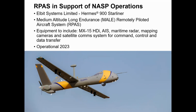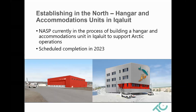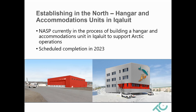Another area of development is establishing supporting infrastructure in the Arctic. NASP aircraft supports Canadian efforts in safety, security, environmental, and economic interests in the Arctic, and the Dash-7 deploys to Iqaluit, Nunavut. To date, crews have been working with no hangar and staying in rented rooms and hotels, which offers challenges to the operation. Transport Canada is investing in Arctic infrastructure: there will be a hangar for the Dash-7 with capacity to support the RPAS and Coast Guard helicopters, plus an accommodation unit for the crew. There have been some delays due to COVID, but we're hoping the hangar will be operational by summer of 2023.